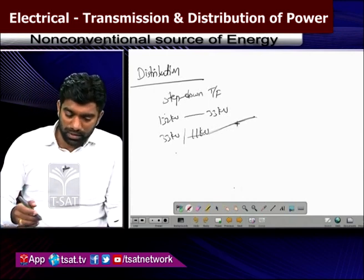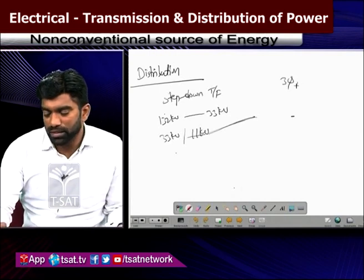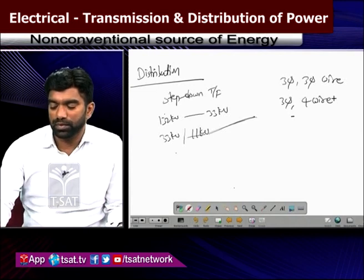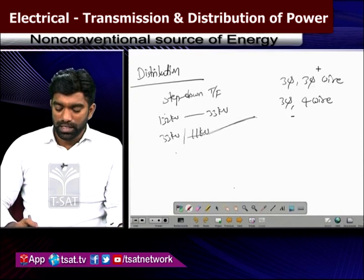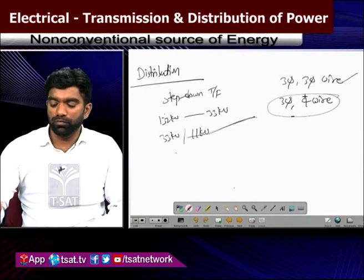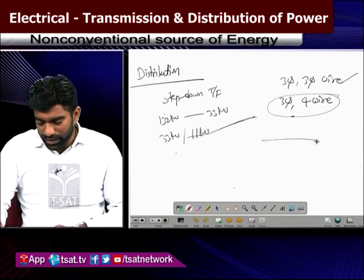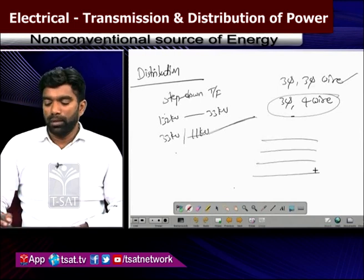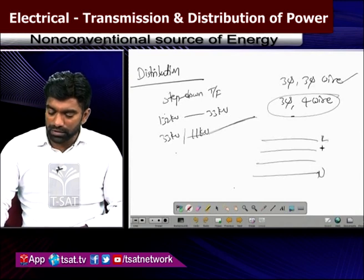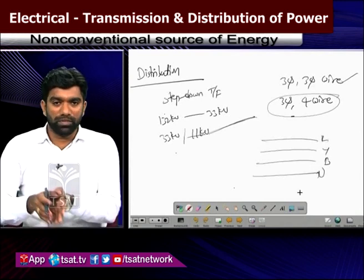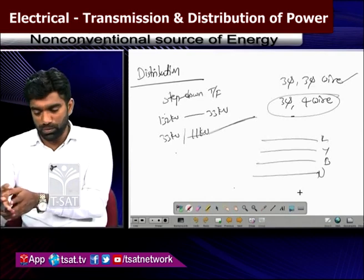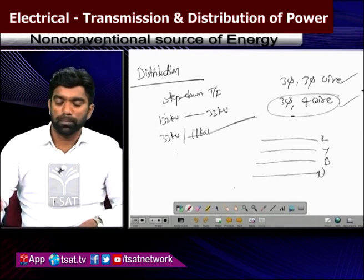Distribution is also of two types: three-phase three-wire system and three-phase four-wire system. In the three-phase four-wire system, the fourth wire is the neutral wire. The advantage of taking the neutral wire is that by using R phase, Y phase, B phase, and neutral, we can take three separate single phases. For distribution, a compulsory four-wire system is taken.